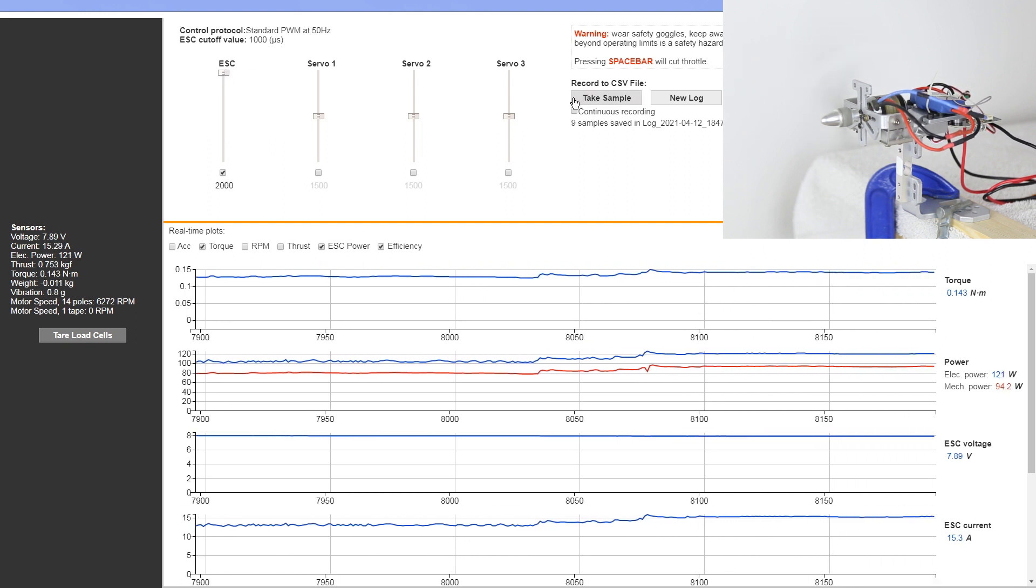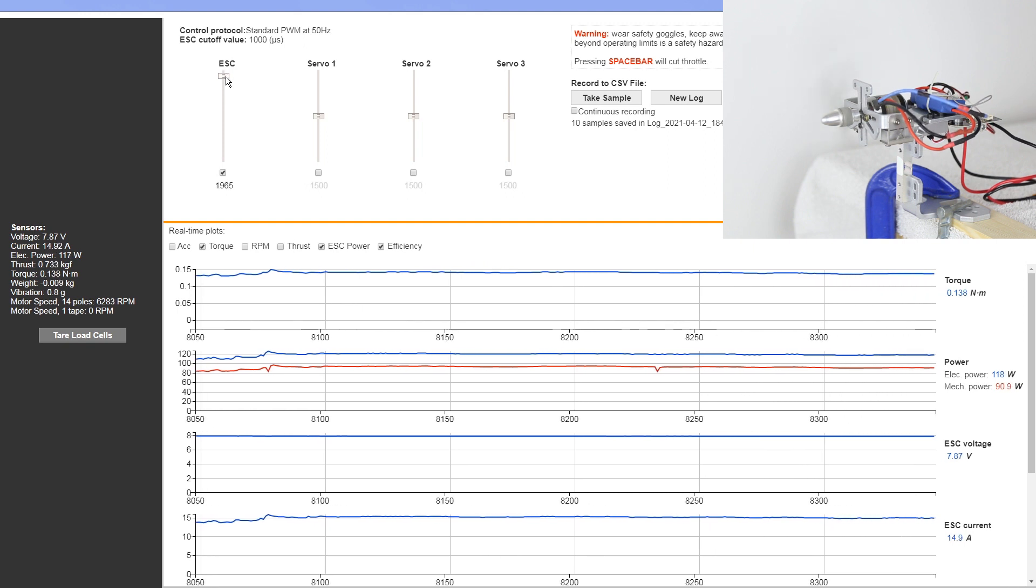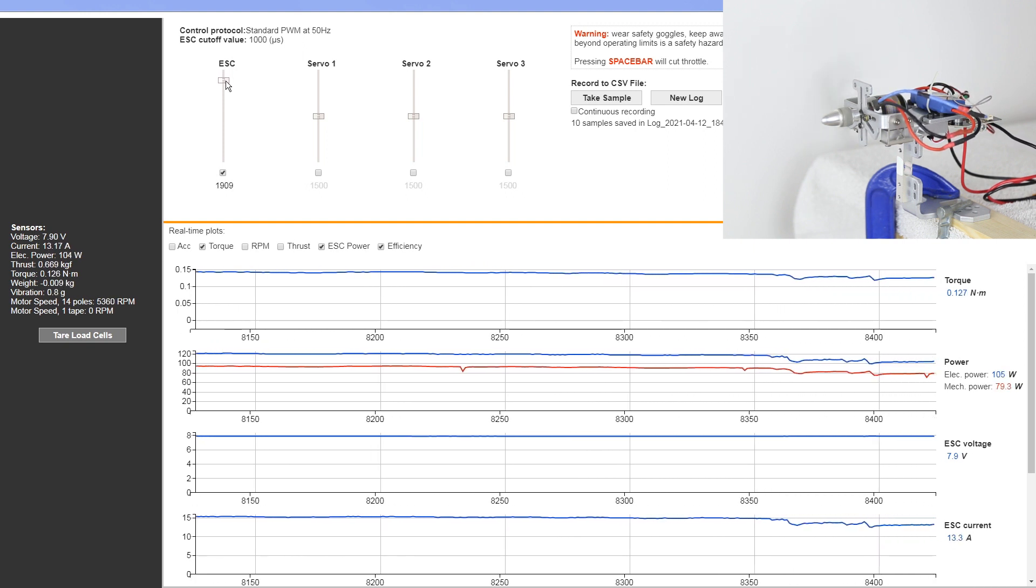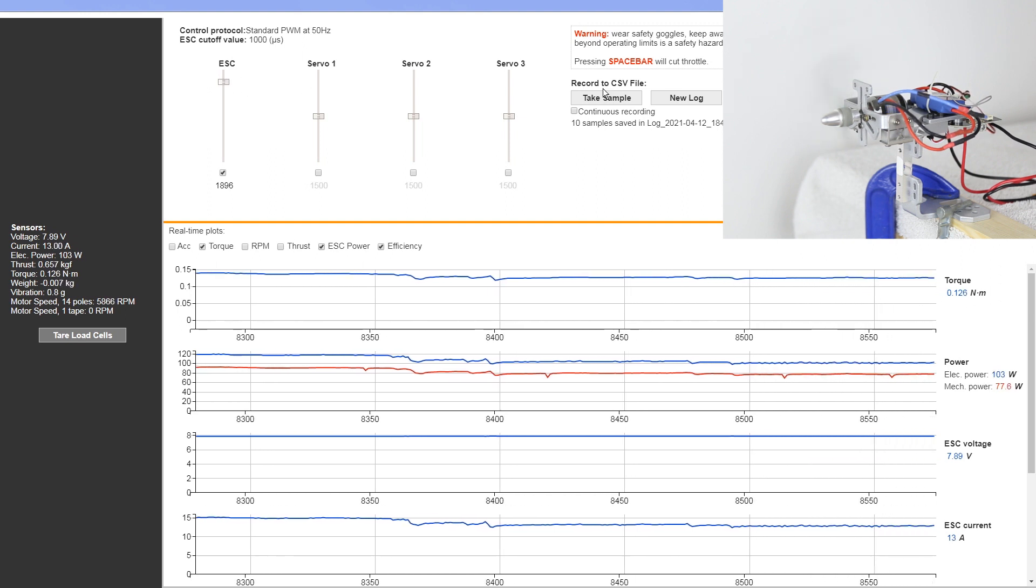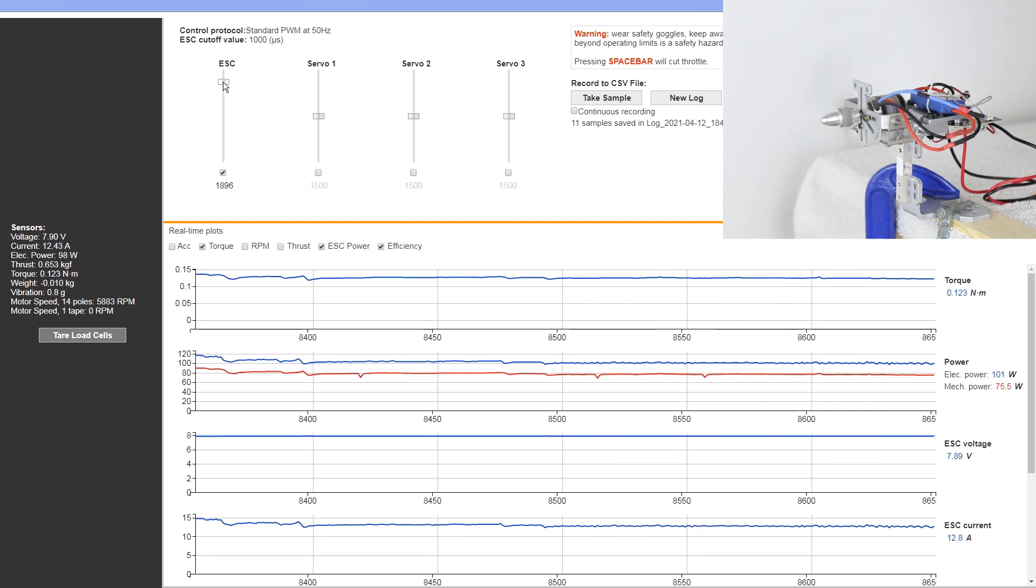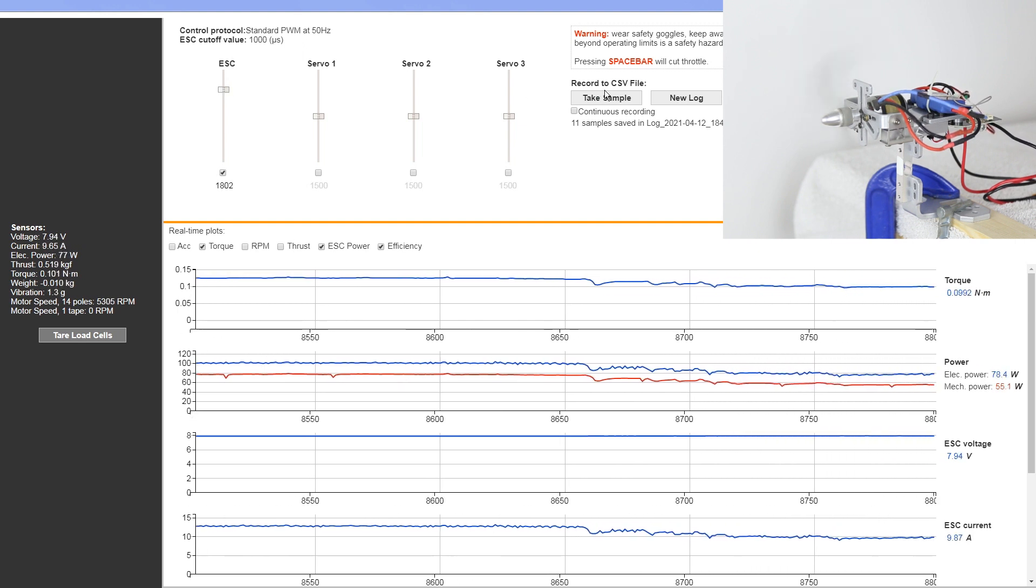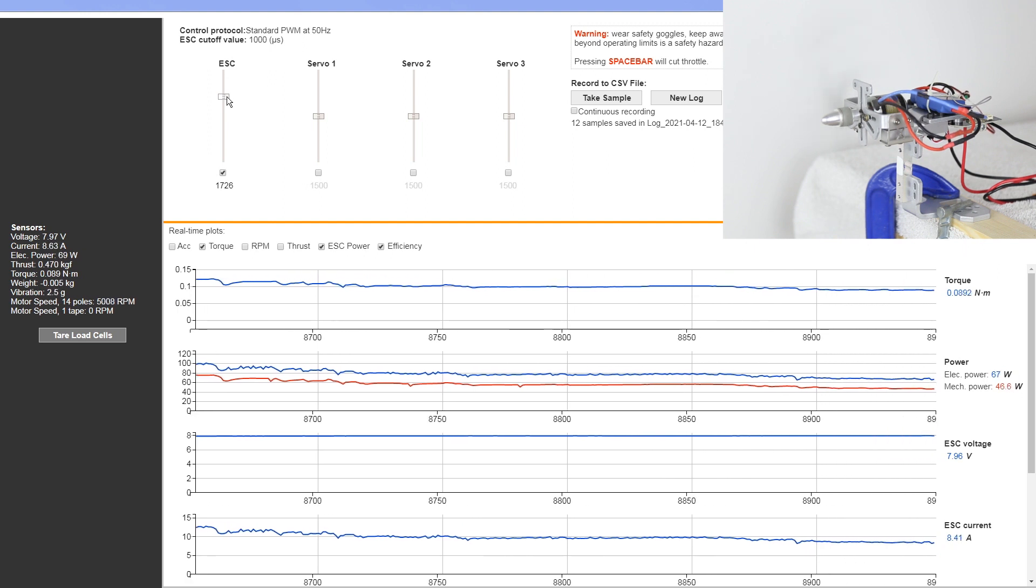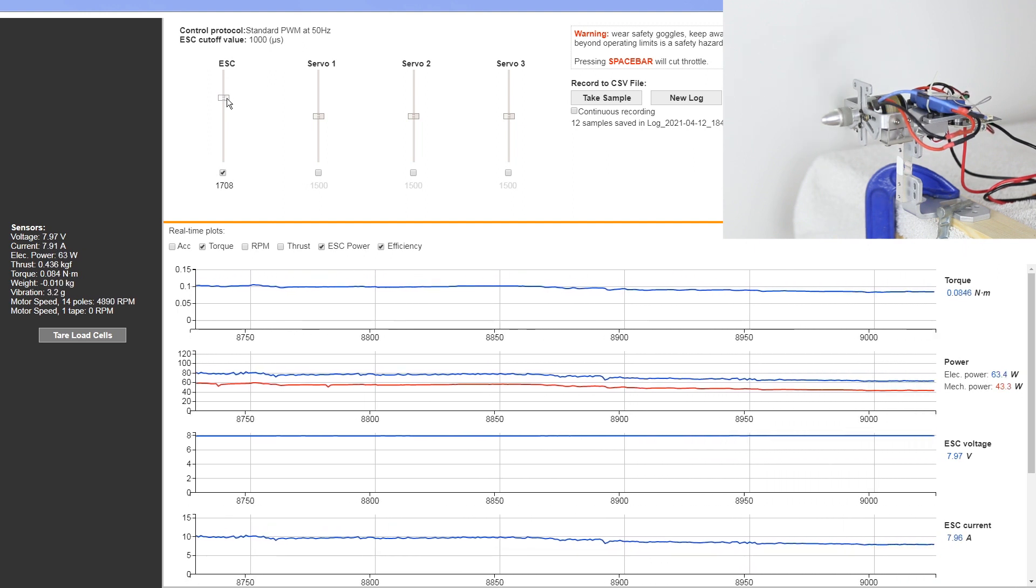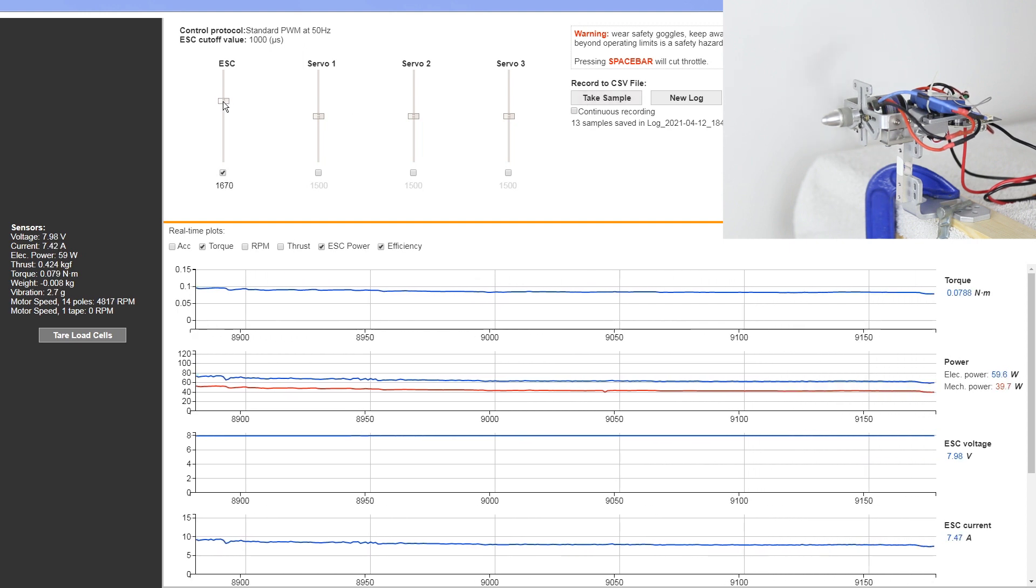Here we are, we are now reaching our maximum. We're going to go back and take yet another sample and now we're going to push back down through 1900, 1800, 1700 and so on. Take note all of the different parameters that we're measuring can be found there on the left side or in the real time plots. As you can see we ramp down in throttle and all the things that should make sense are making sense.